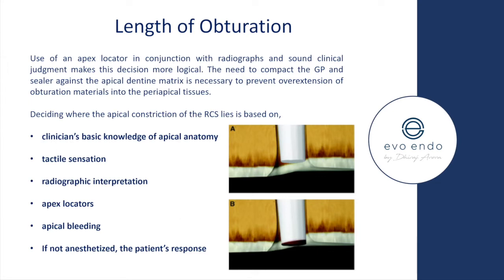The need to compact GP and sealer against an apical dentine matrix is necessary to prevent over-extension of obturation materials into periapical tissues. Root fillings at or short of the radiographic apex are more successful than those that have extruded. Basic knowledge of apical anatomy is important — there's a foramen, a constriction, not necessarily just one point on one apical foramen, and there may also be an apical delta. Recognizing that curvatures commonly exist in the apical third is very important.